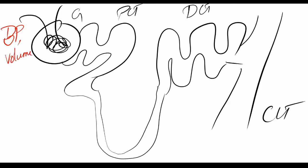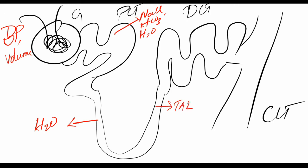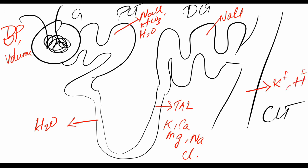In the PCT, there is reabsorption of sodium chloride, bicarbonate ions, and water. In the loop of Henle, there is absorption of water in the downward part. In the upward part — the thick ascending loop of Henle — there is reabsorption of potassium, calcium, magnesium, sodium, and chloride. In the DCT, reabsorption of sodium chloride occurs. Finally, in the collecting duct, mainly potassium and acid ions — H⁺ ions — and sodium chloride are exchanged.